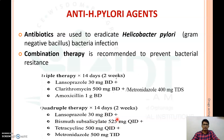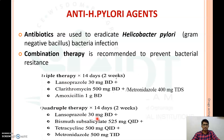In quadruple therapy, lansoprazole 30 mg BD is combined with bismuth subsalicylate 525 mg QID, tetracycline 500 mg QID, and metronidazole 500 mg TID. This is used for the treatment of H. pylori infection and H. pylori-induced peptic ulcer. The anti-H. pylori agents include amoxicillin and metronidazole as antibiotics, lansoprazole as a proton pump inhibitor, and bismuth subsalicylate as an ulcer protective agent.